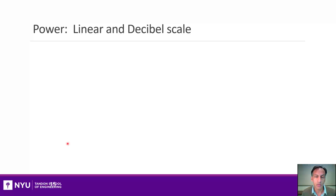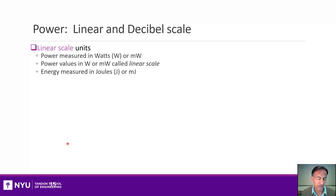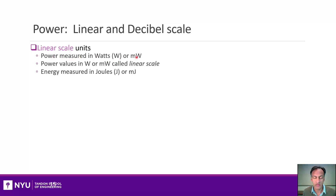In wireless communications, you typically think about power and energy in dB scale instead of linear scale. When we think about linear scale units for power, that is power measured in watts or milliwatts, as in any undergraduate physics class. Wireless engineers call that linear scale. Energy would be in joules or millijoules — a joule being one watt over one second.